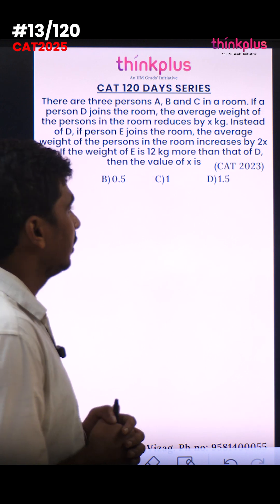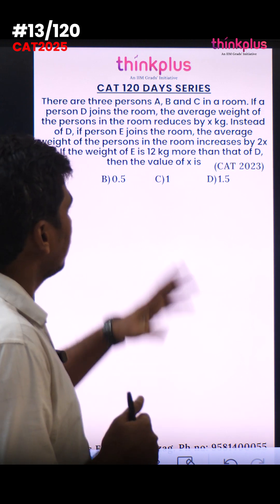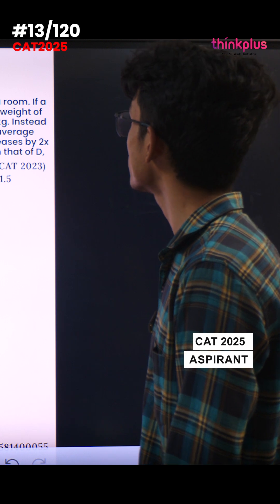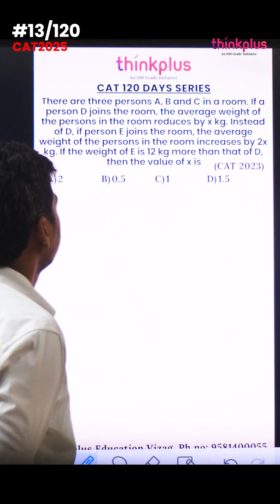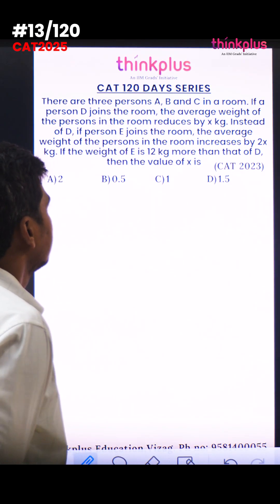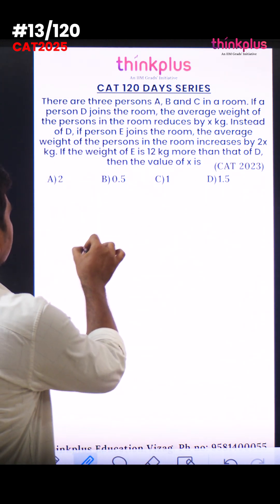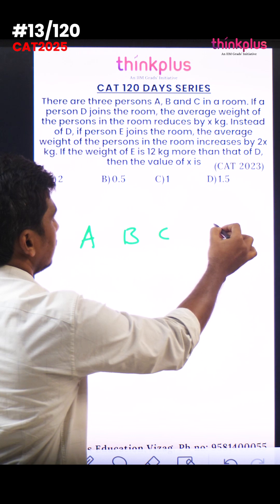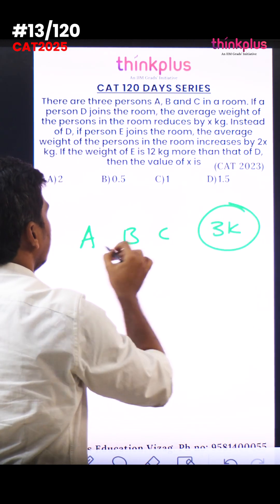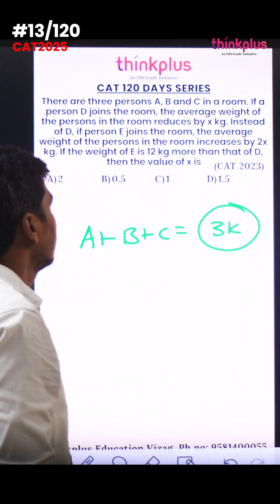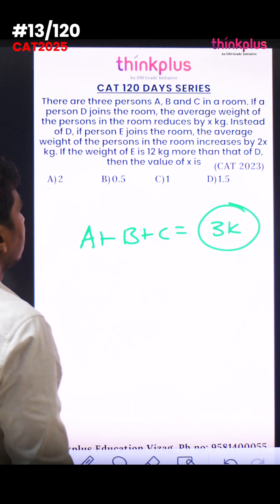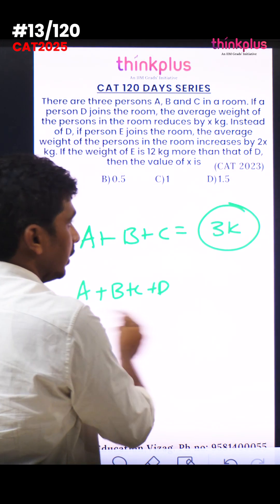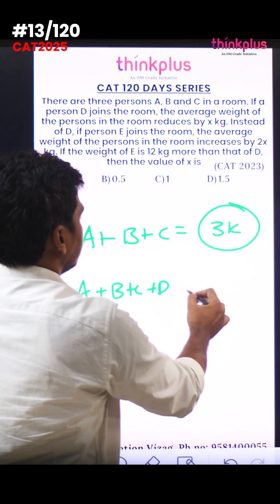CAAT 2023 question: there are three persons A, B, C in a room. If person D joins, the average weight reduces by X kg. Initial average is K, so A+B+C = 3K. After D joins: (A+B+C+D)/4 = K minus X, so A+B+C+D = 4(K minus X).